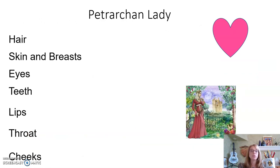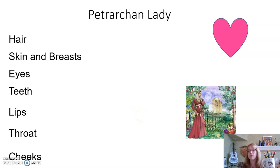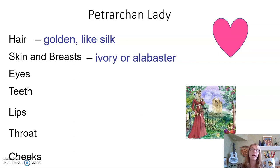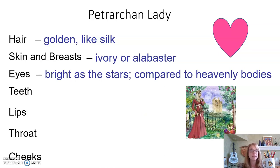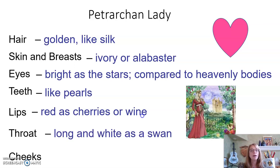Petrarch wrote over 300 sonnets to this lovely lady named Laura, who was already married. He met her in church and practiced amour courtois — love from afar. The Petrarchan lady becomes a stereotypical figure you'll recognize from fairy tales and Disney movies. These are the qualities of Laura: although Italian, she was a northern Italian woman who was very fair, with hair golden like silk, skin and breasts like ivory or alabaster, eyes bright as the stars compared to heavenly bodies, teeth like pearls, lips as red as cherries or wine, a throat as long and white as a swan, and cheeks like peaches.